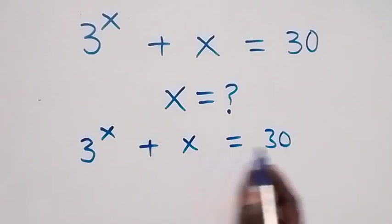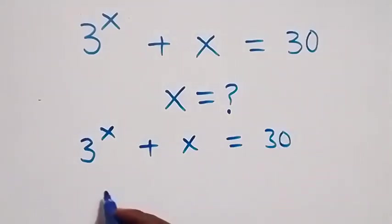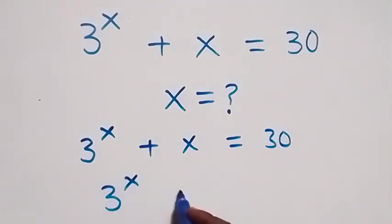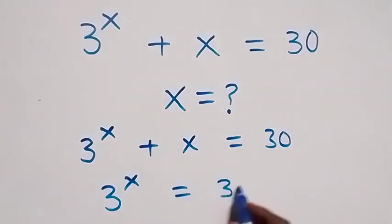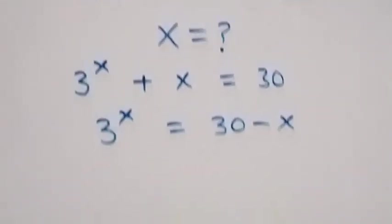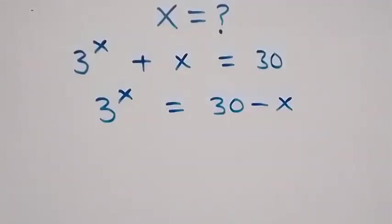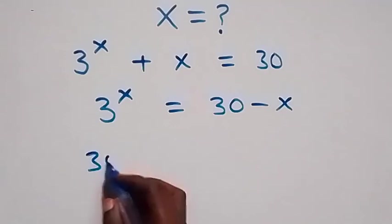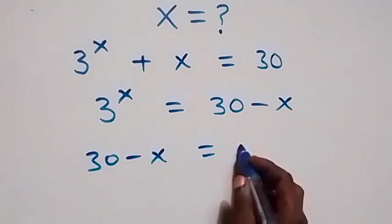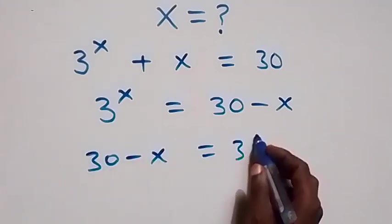Here let's take x to this side, so we have 3 raised to power x equals to 30 minus x. This is the same thing as writing 30 minus x equals to 3 raised to power x.